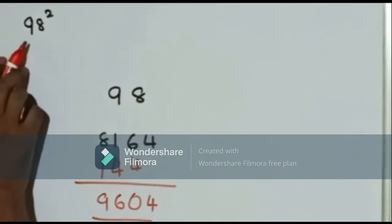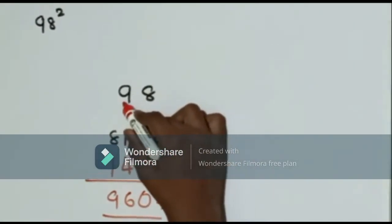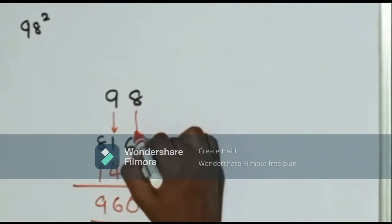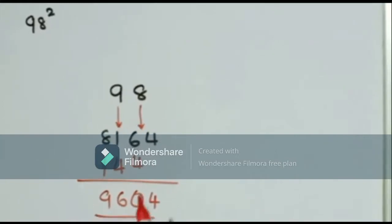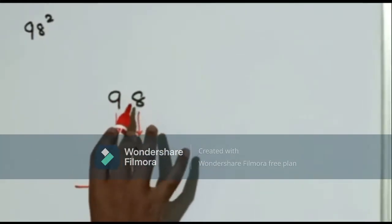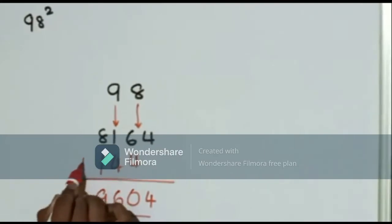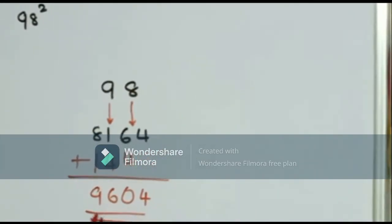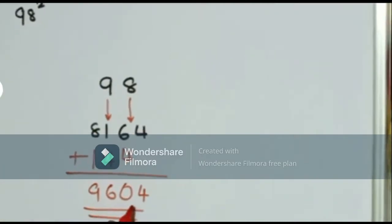In the second example we have 98 square. We need to find the square of 9 which is 81 and the square of 8 which is 64. Now we multiply the product of these two by 2 and we get 144. Now we add these two numbers and we get the square of 98 which is 9604.